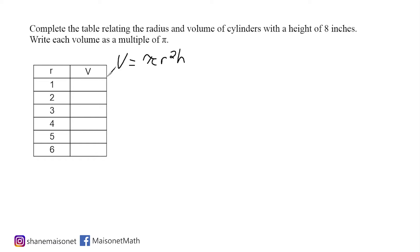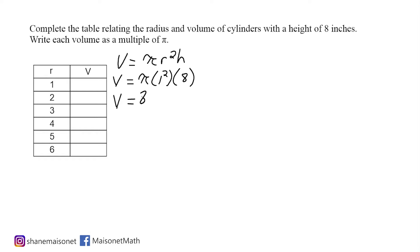For the first cylinder, we are going to substitute r = 1, square that, and multiply by a height of 8. The radius squared, or 1 to the second power, is 1, and 1 times 8 is 8, so our answer is 8 pi. Let's record that the volume is 8 pi.